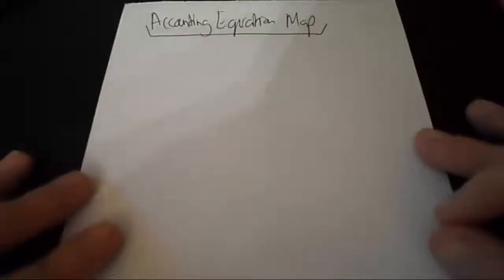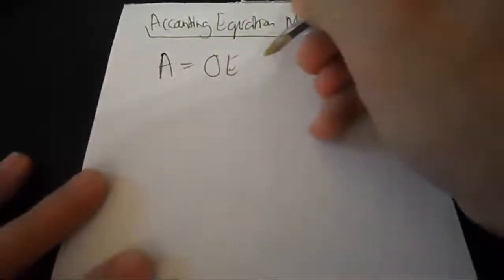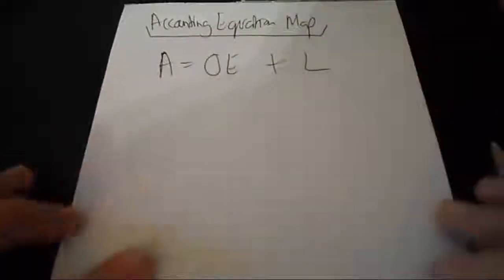Hi guys and welcome to this lesson on the accounting equation map. Now most of you know the formula for the accounting equation, that is assets is equal to owners equity plus liabilities.